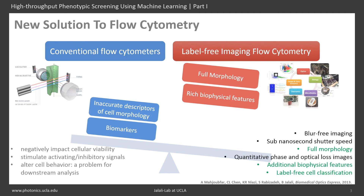Imaging flow cytometry, on the other hand, captures images of cells, revealing significantly more information about the cells. For example, it can distinguish clusters and debris that would otherwise result in false positive identification in conventional flow cytometry based on light scattering.